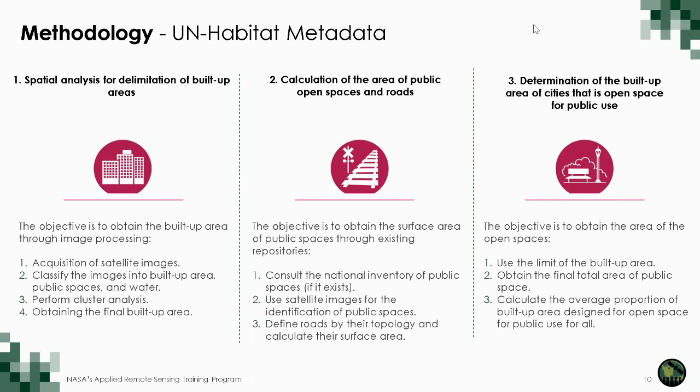The second step is the calculation of public open space and roads. To perform this step, the idea is to collect information from the national inventory, if it exists, or use satellite images to identify public space. It is also important to define roads by topology and calculate the surface area. The third step is to determine what percentage of built-up area corresponds to public space.